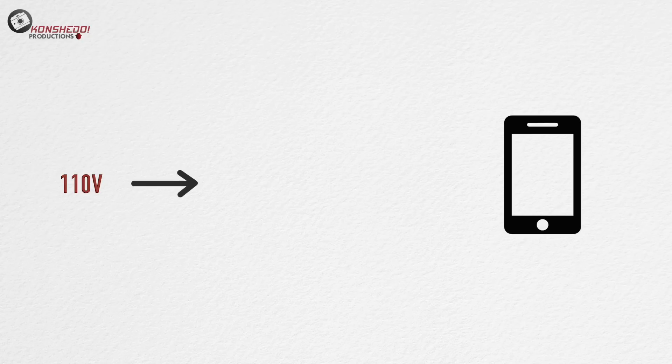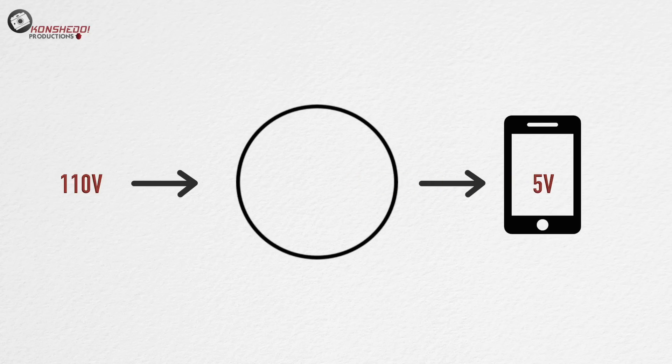Now, if the 110 voltage went inside the inner components of the phone, it would destroy the phone. So before the current enters the phone, it must pass through a circuit which will restrict the voltage and allow only 5 voltage to pass. This is called a step-down circuit.